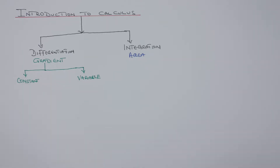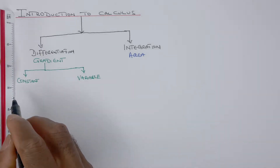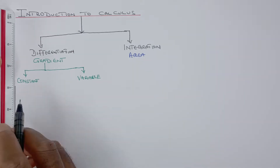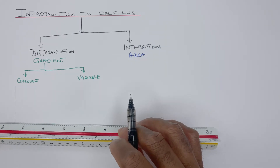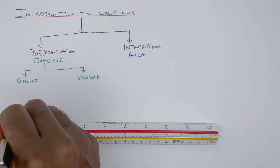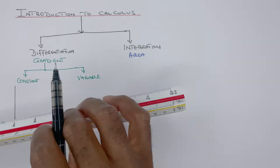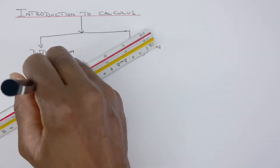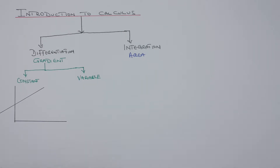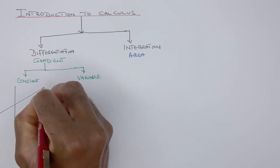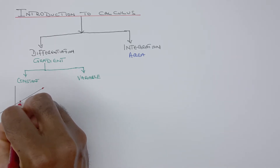The constant gradient is basically the gradient of a straight line. So if you have your y-axis and your x-axis, and your curve is a straight line, that is a constant gradient.